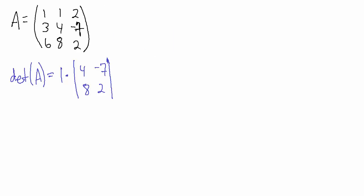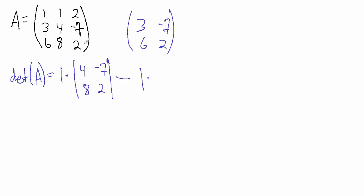Now what we do next is say minus this 1, and then we multiply by — well, this 1 is in the first row in the second column, so what we want to do is ignore the first row, ignore the second column, and what's left? The 3, the negative 7, the 6, and the 2 are what's left. So we take 3, negative 7, 6, and 2 — imagine those give us a matrix — and we multiply this 1 by the determinant of that matrix: 3, negative 7, 6, and 2.